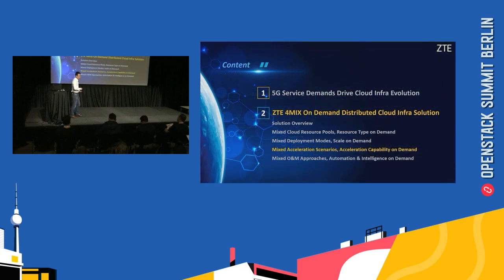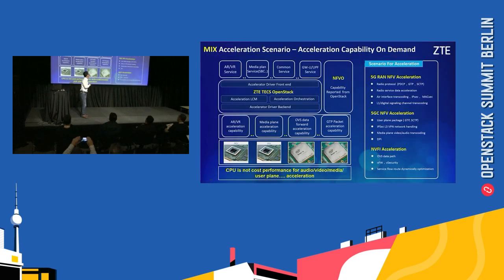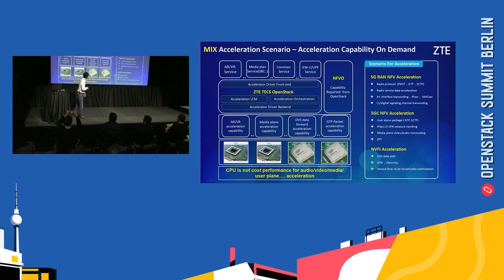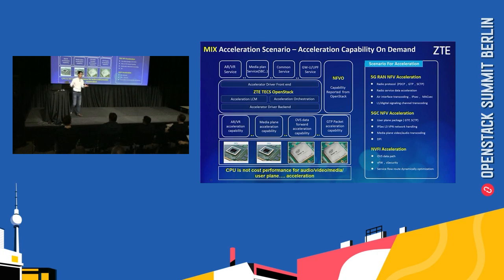For acceleration: there are different scenarios — 5G RAN acceleration, NFC acceleration, and more. CPU alone is not sufficient, so we must introduce GPU, FPGA, or NPU and other third-party accelerators. OpenStack and ZTE tech should manage these kinds of accelerations and third-party hardware. ZTE has cooperation with Intel, adopting their FPGA to provide acceleration capabilities to upper-layer services.